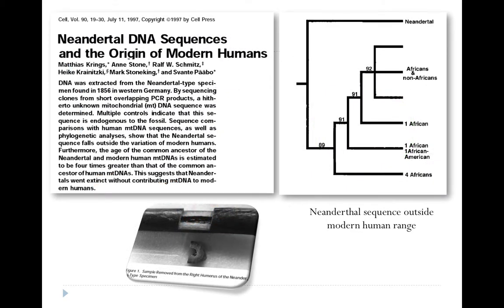The very first papers in the 1990s reported Neanderthal DNA sequences and drew phylogenetic trees showing they fall well outside the range of modern humans. Modern human diversity fits in one small branch from out of Africa, while the Neanderthals are way outside all of that. Svante Pääbo — a name that reverberates through this field, a Swedish paleoanthropologist and sequence expert — was involved in this work. Their conclusion was that 'Neanderthals went extinct without contributing mitochondrial DNA to modern humans.'